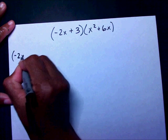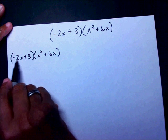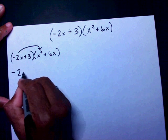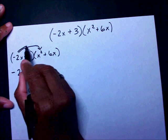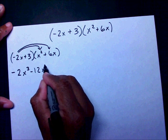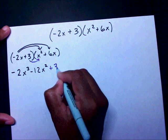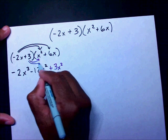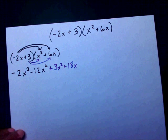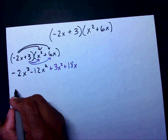Welcome back. Let's do the first method. We have negative 2x plus 3 times x squared plus 6x. I'm going to multiply my negative 2x times x squared, which gives me negative 2x cubed. Then I multiply negative 2x times 6x, which gives me negative 12x squared.